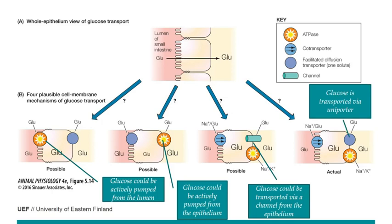The actual mechanism is a glucose transporter — a uniporter. It is a little slower than a channel, but it binds glucose and releases it, allowing glucose to move from the epithelial cell into the circulation. The same outcome could have been achieved several different ways.